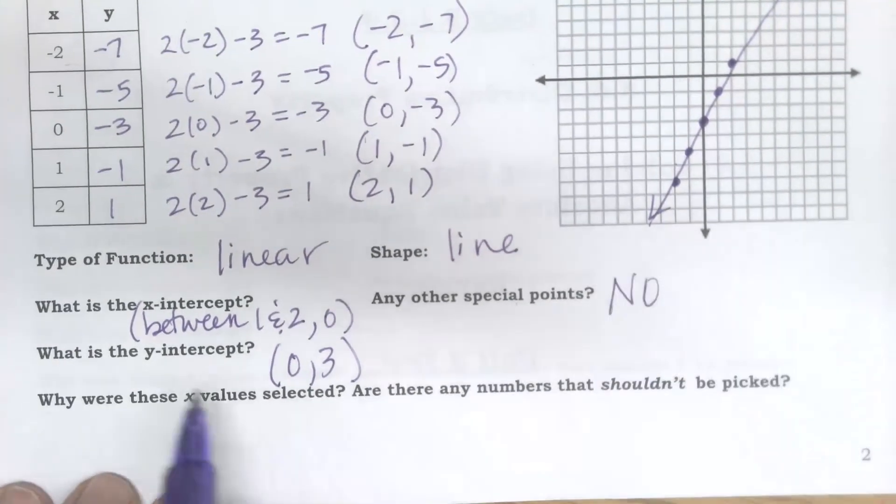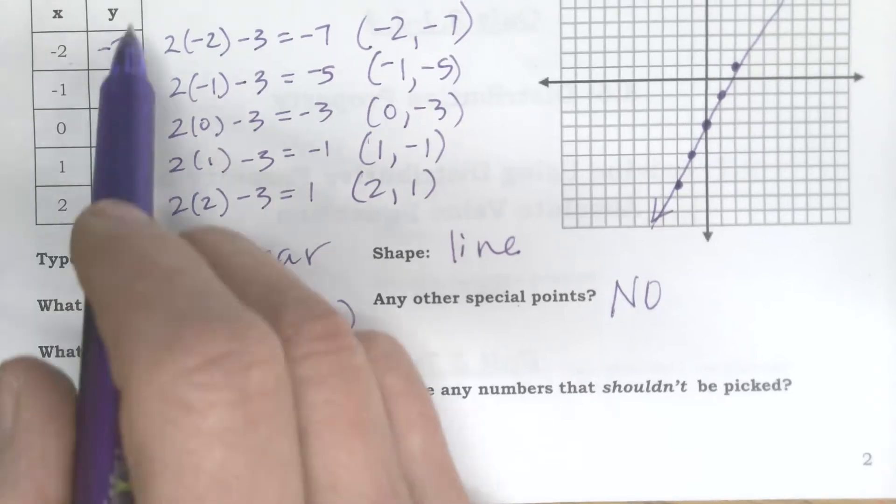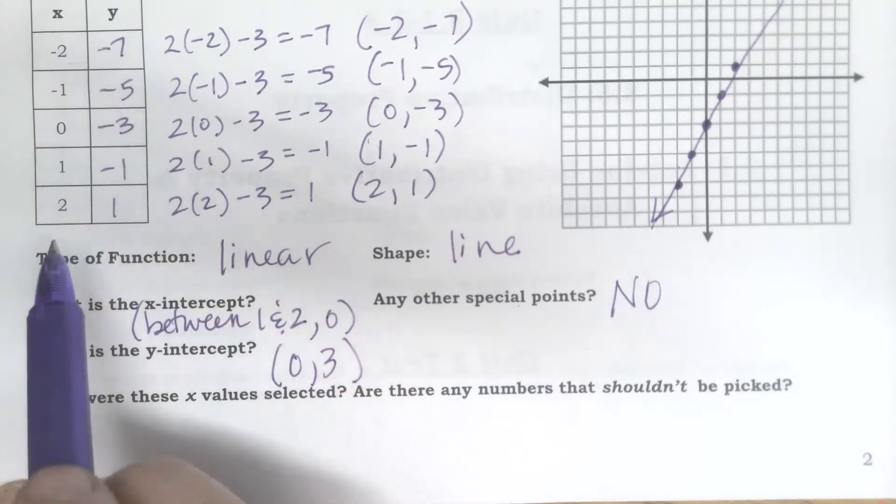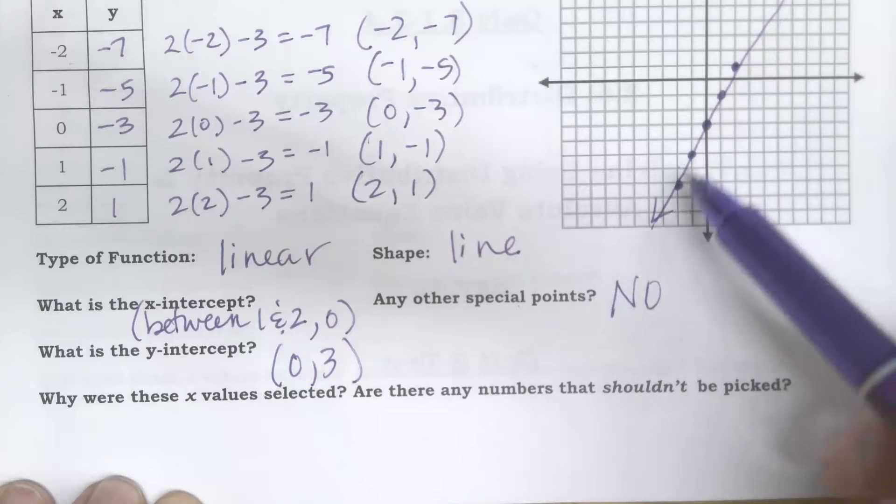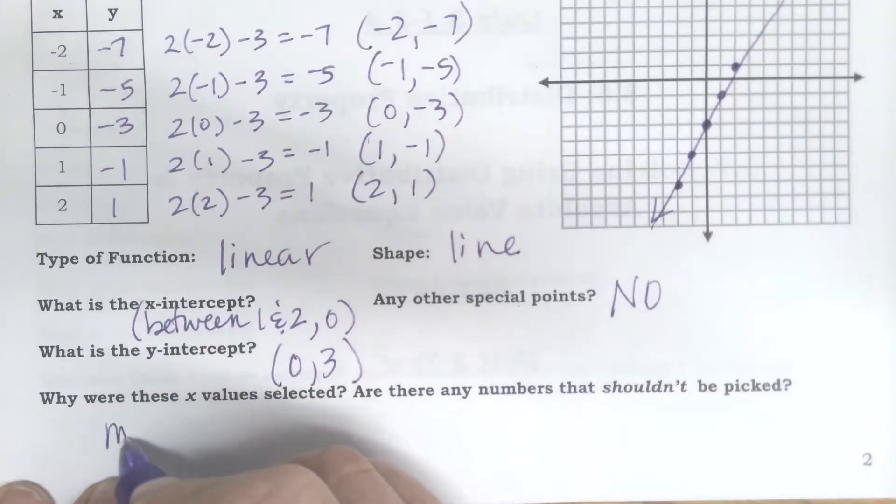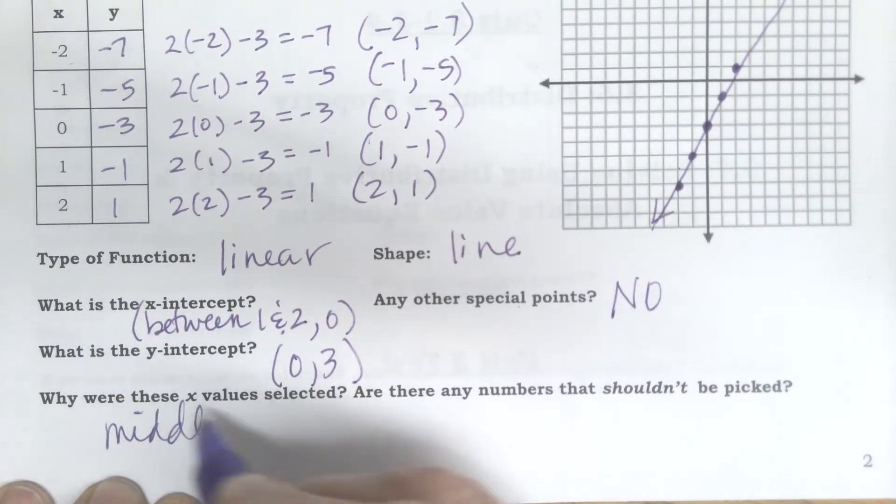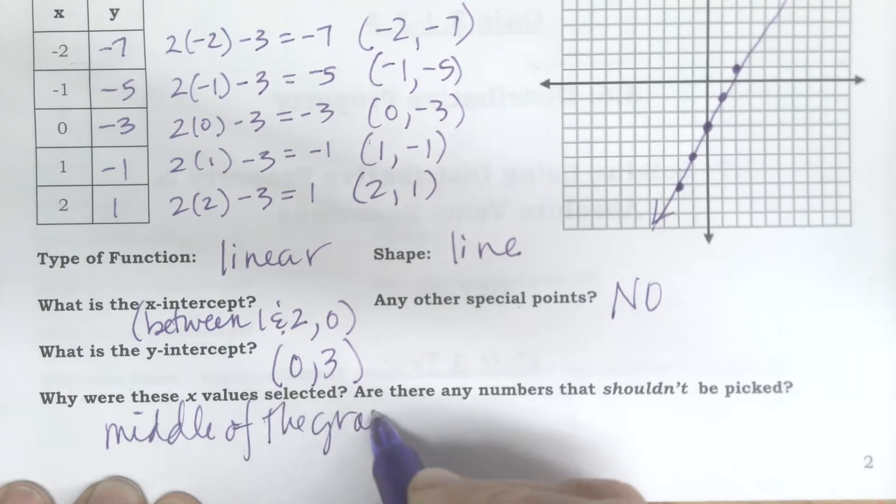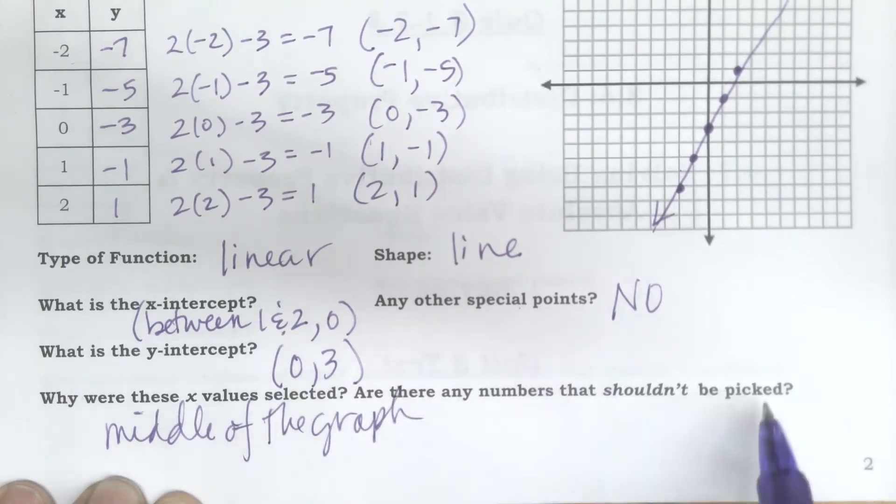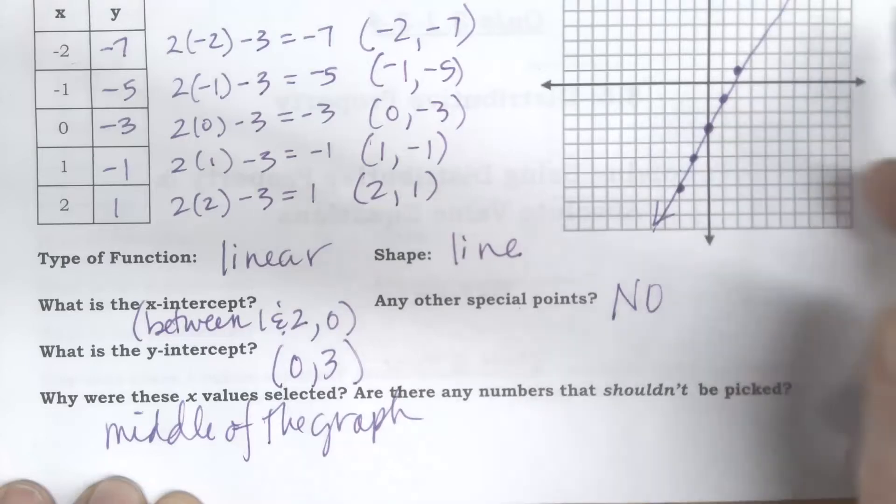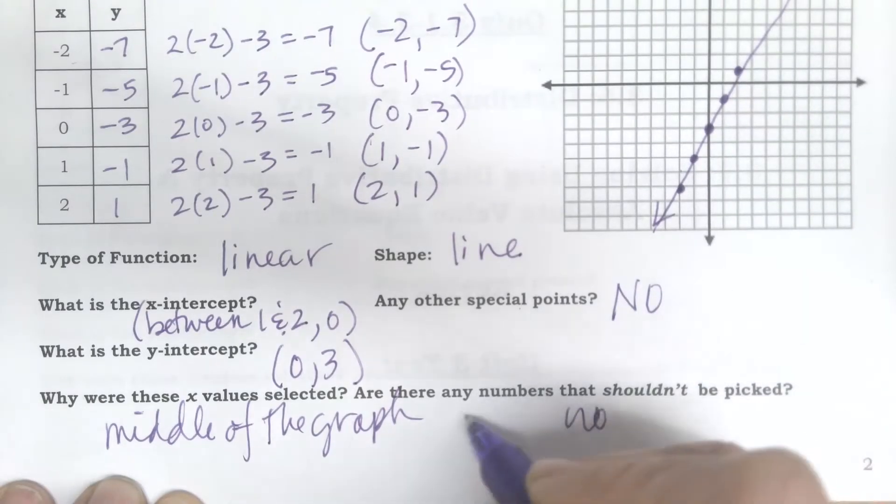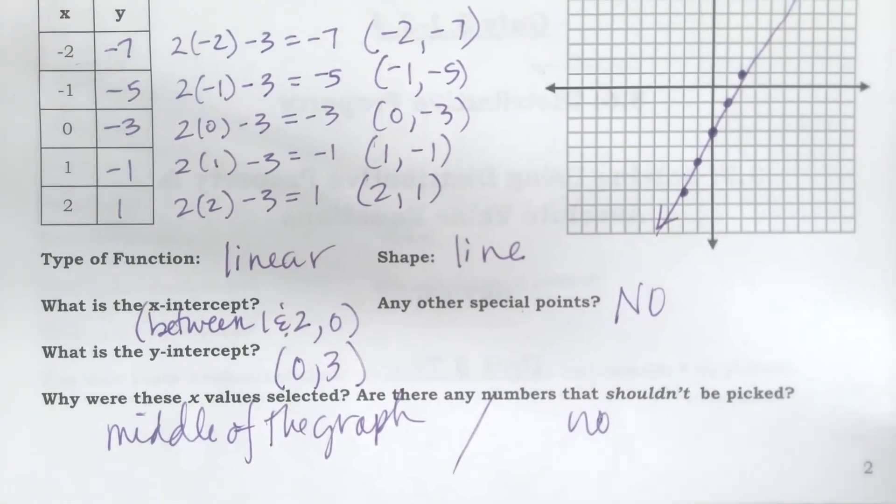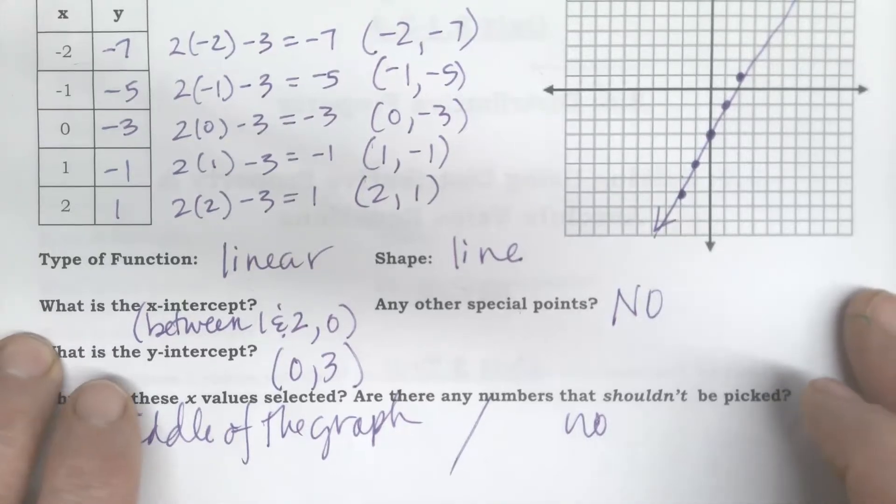So why did we choose these x values? I guess I chose them because they were in the middle of the graph. Are there any numbers that I couldn't have picked? No, you could pick anything.